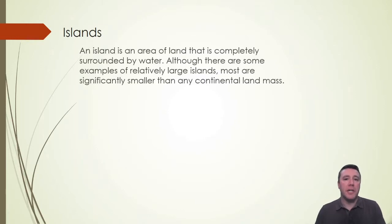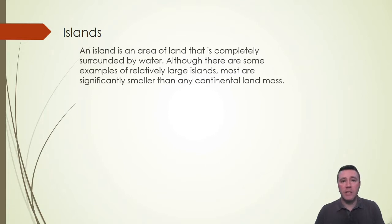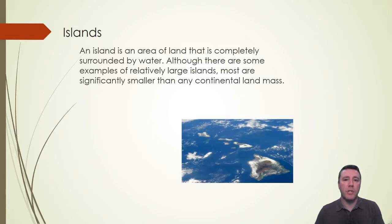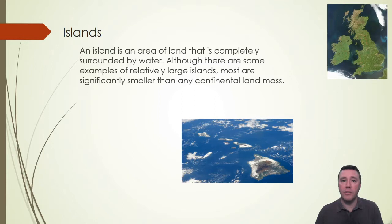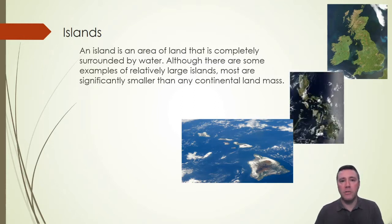By definition, an island is an area of land that is completely surrounded by water. Although islands vary greatly in size — with some being no more than a few square meters and others being quite large — nearly all of them are significantly smaller than any continental landmass. Geologic processes have produced islands in small groupings, like the Hawaiian Islands and the British Isles, and also as collections of thousands of islands, such as the Philippines.